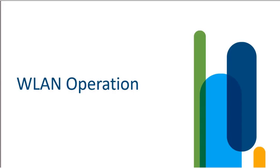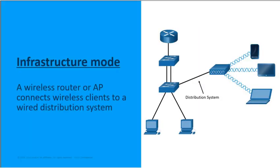Let's jump into wireless LAN operations. We need to talk about two different types of modes: infrastructure mode and ad hoc mode. With infrastructure mode, we're focusing on a wireless network connected to wireless devices, but that wireless network is also hooked to a wired distribution system. That means our wireless router is connected with a wired Ethernet cable down into our infrastructure.